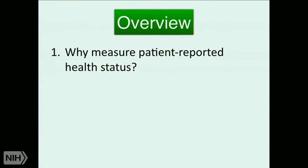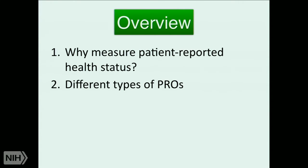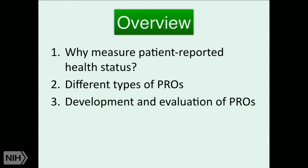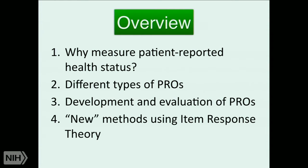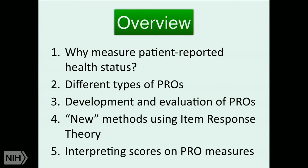First of all, why measure patient-reported health status? What are the different types of patient-reported outcomes? When I say PROs, it's going to be patient-reported outcomes. How are patient-reported outcome measures developed and evaluated? We want to talk about some new methods for doing patient-reported outcomes research using item response theory — and I put 'new' in quotes because it's new for health measurement, but not new for measurement in general. Education testing folks have been doing this for a long time. And then finally, we want to say a word about interpreting scores that you get out of patient-reported outcome measures.